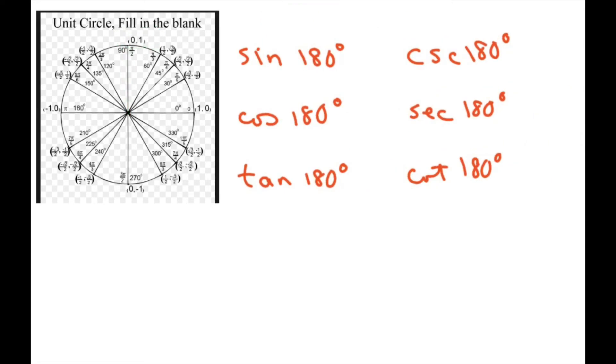All right, now for 180, which is here, my ordered pair is negative 1, comma 0. So sine is y over r, which is 0 over 1, which equals 0. Cosine is negative 1 over 1, which equals negative 1.